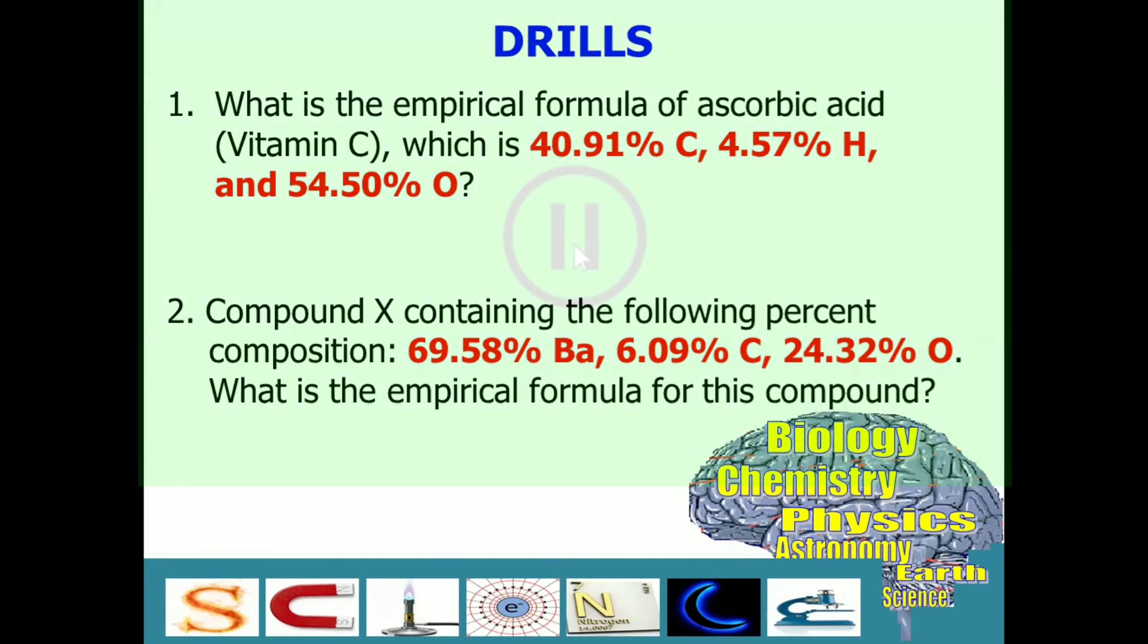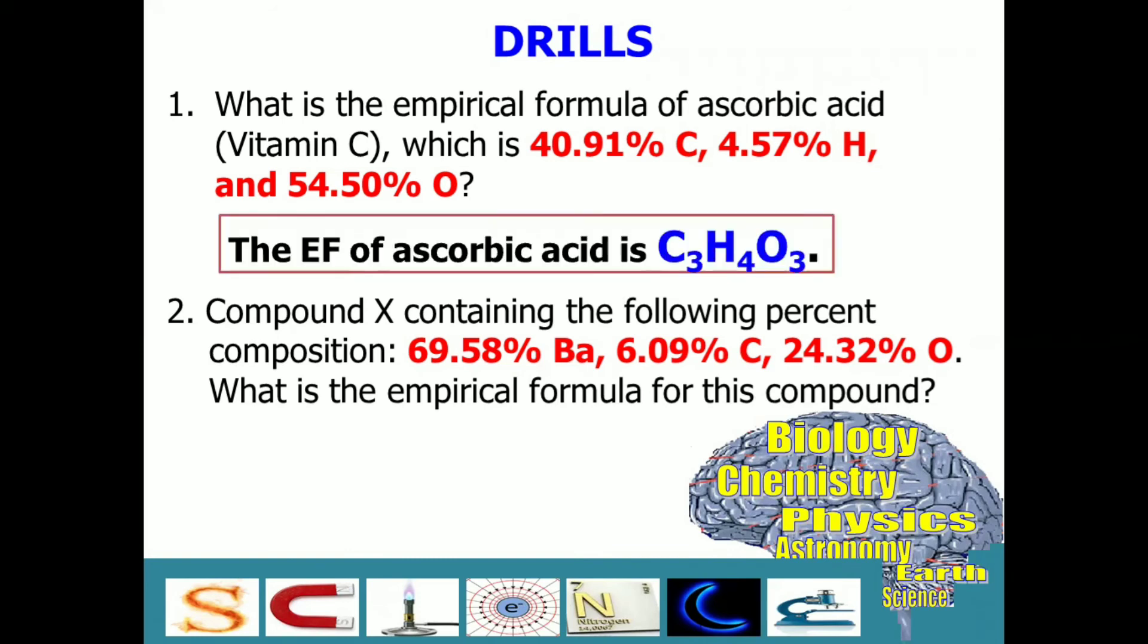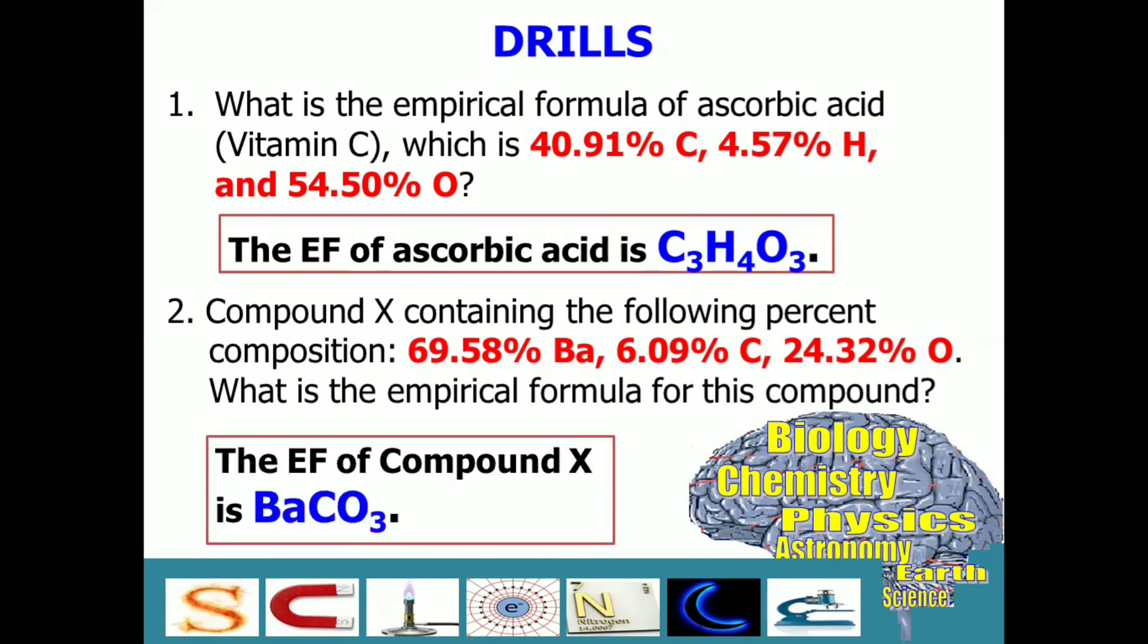The answer for number one is the empirical formula for ascorbic acid or vitamin C is C3H4O3. How about our compound X, which involves the elements barium, carbon, and oxygen? The correct answer here is BaCO3. This is an ionic compound, and if we name it, it is barium carbonate.